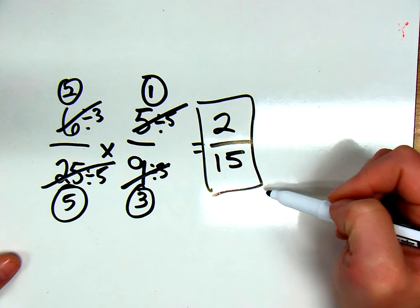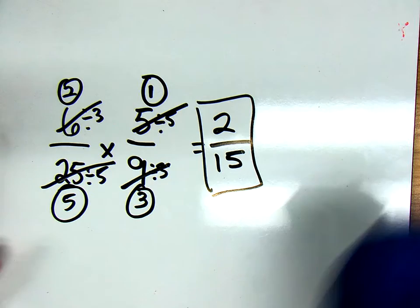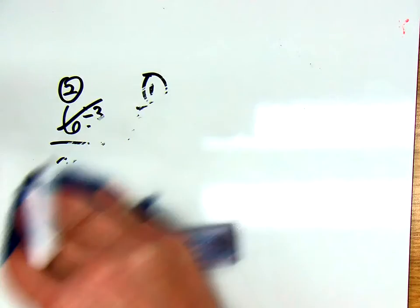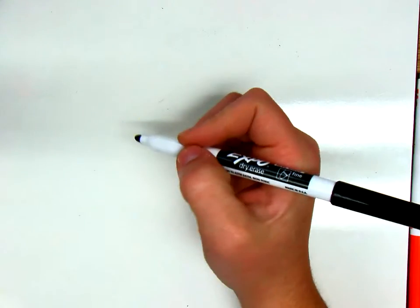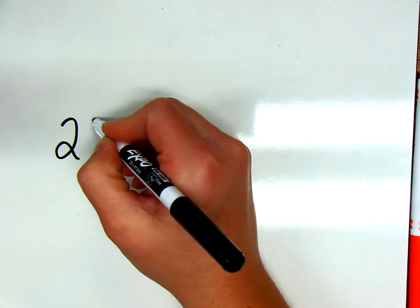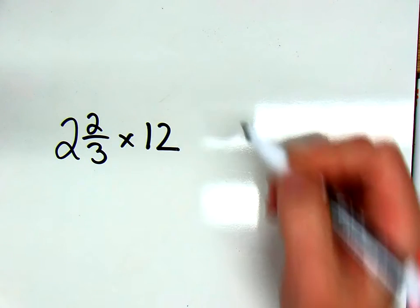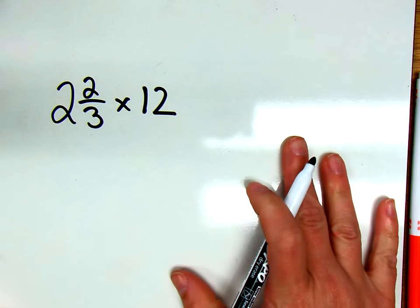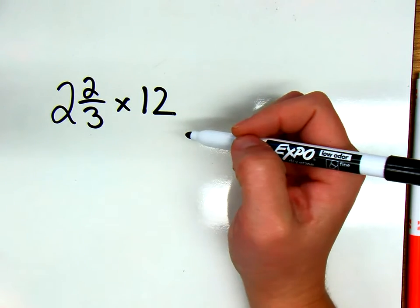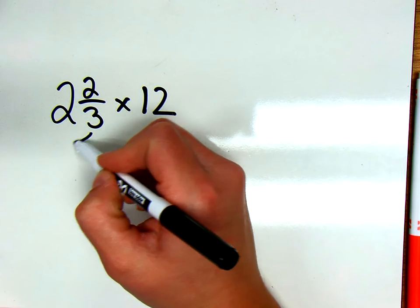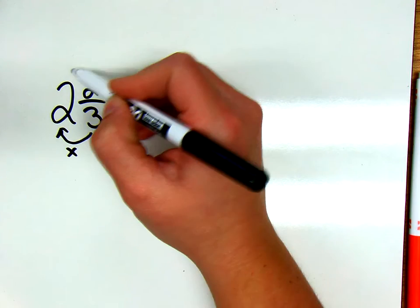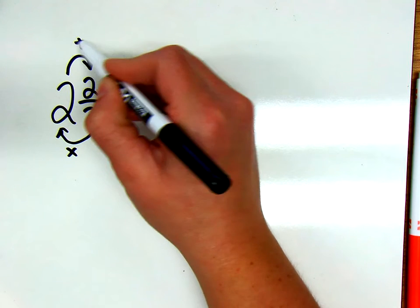Just double checking, nope we can't simplify that at all - that's our final answer. So that's a reminder of what we've previously done. Now we're going to add in mixed numbers. Reminder that we always put a 1 underneath our whole number. So the first problem I want to start with is going to be 2 and 2/3 times 12.